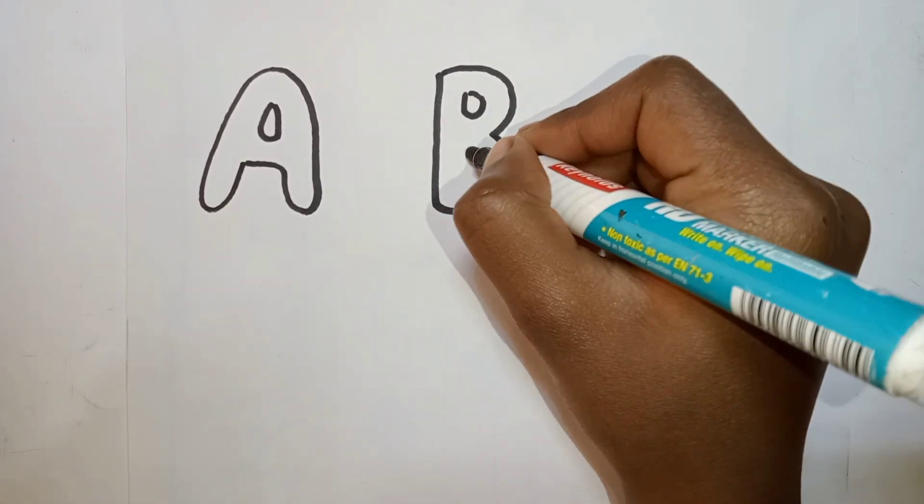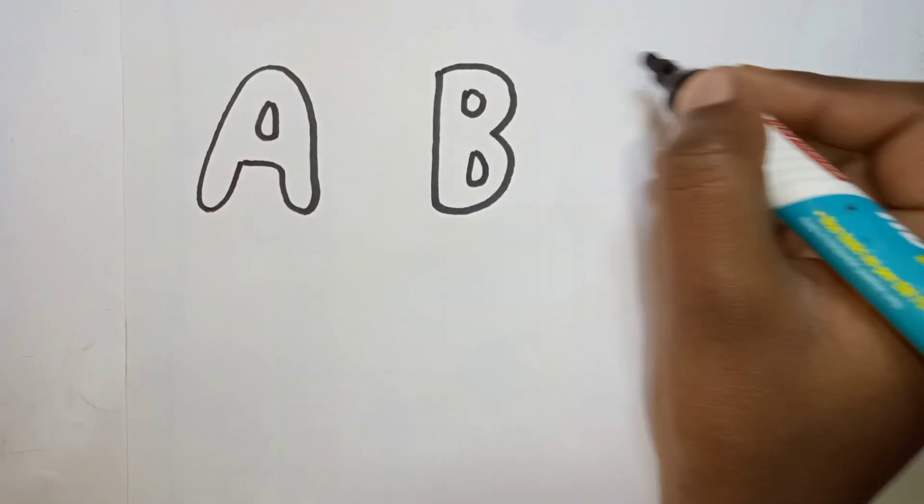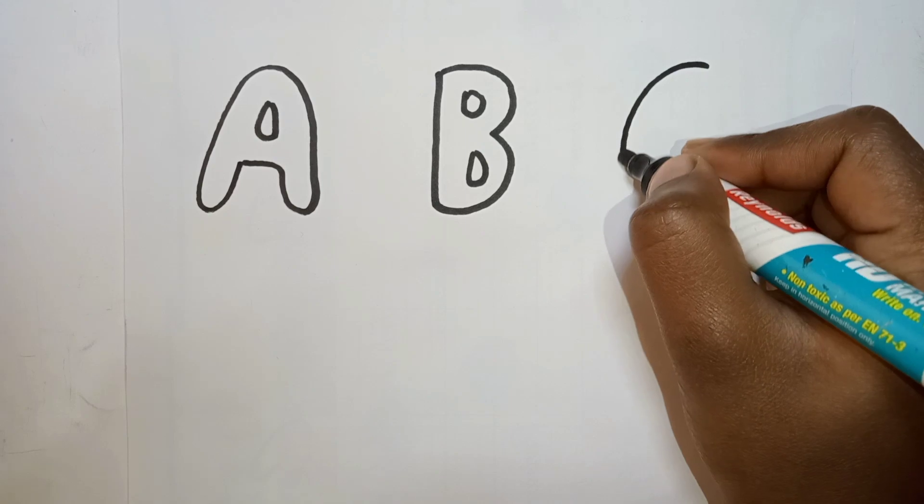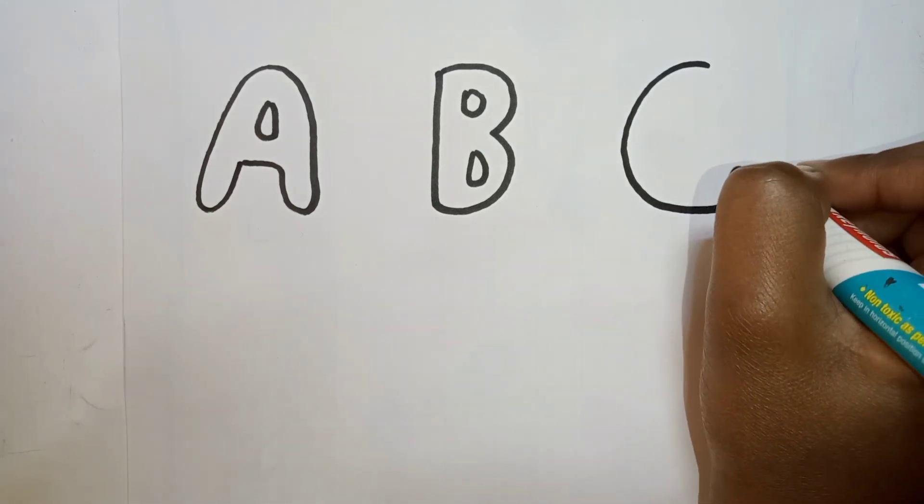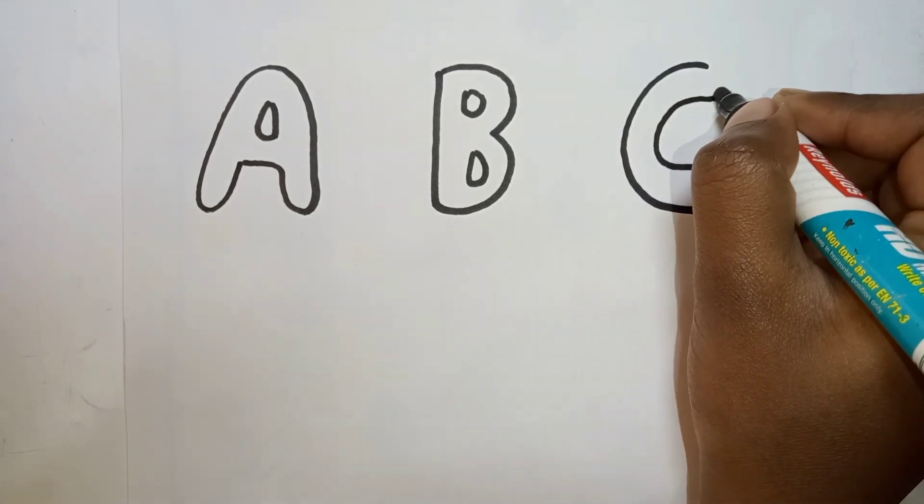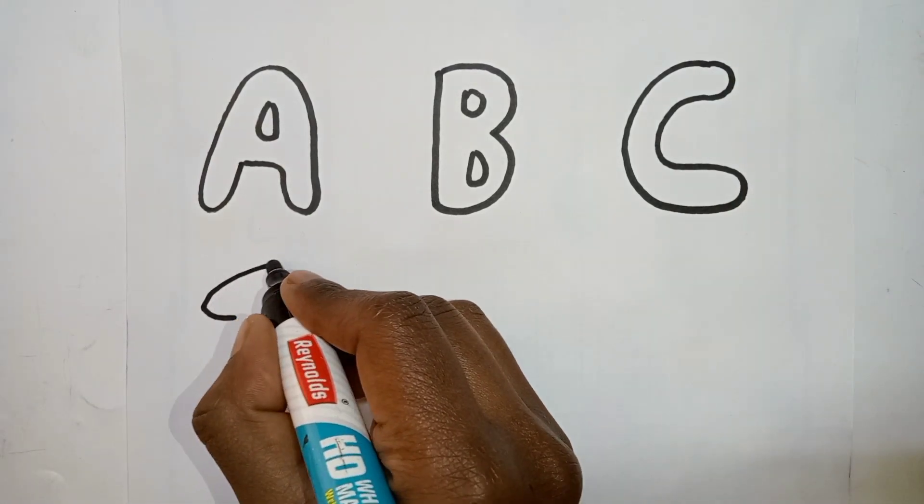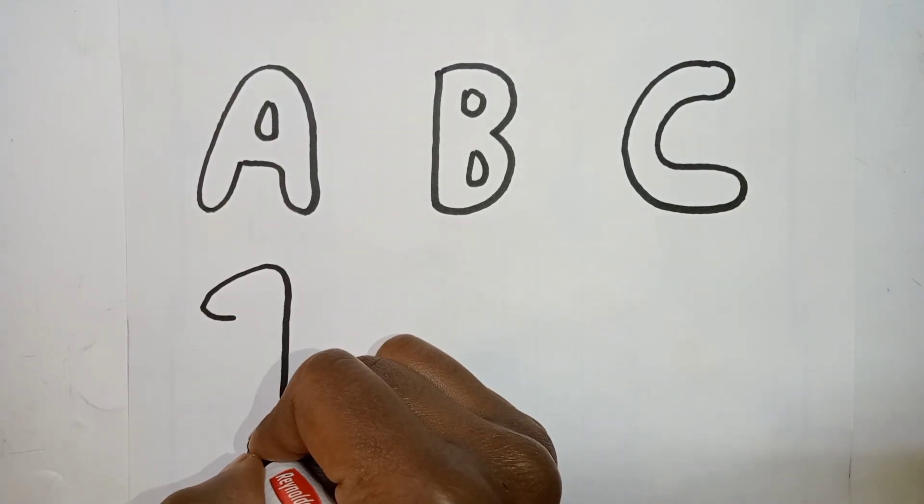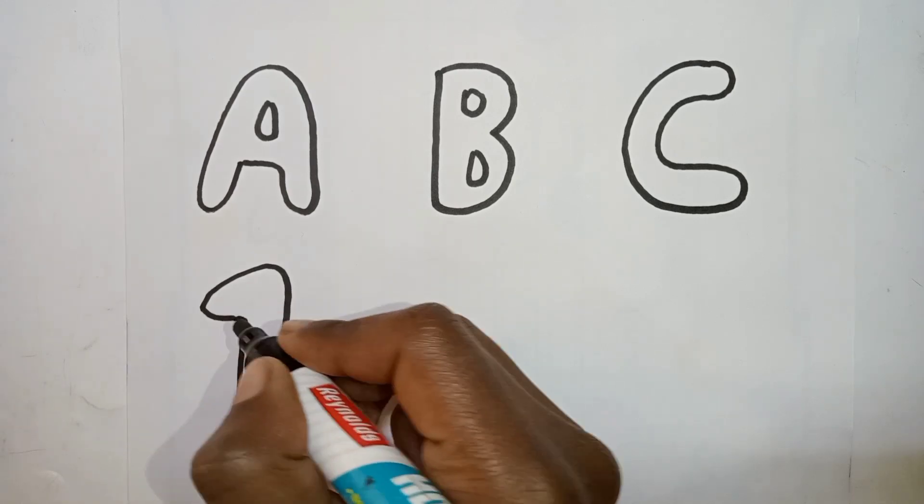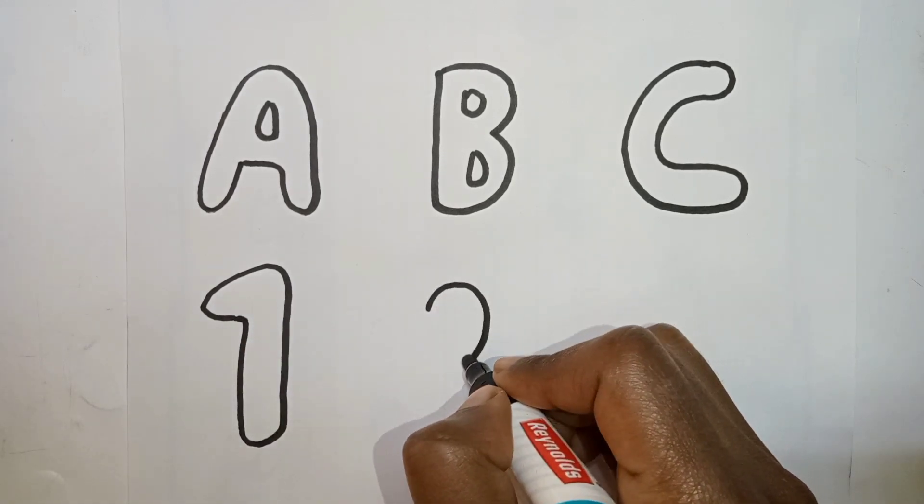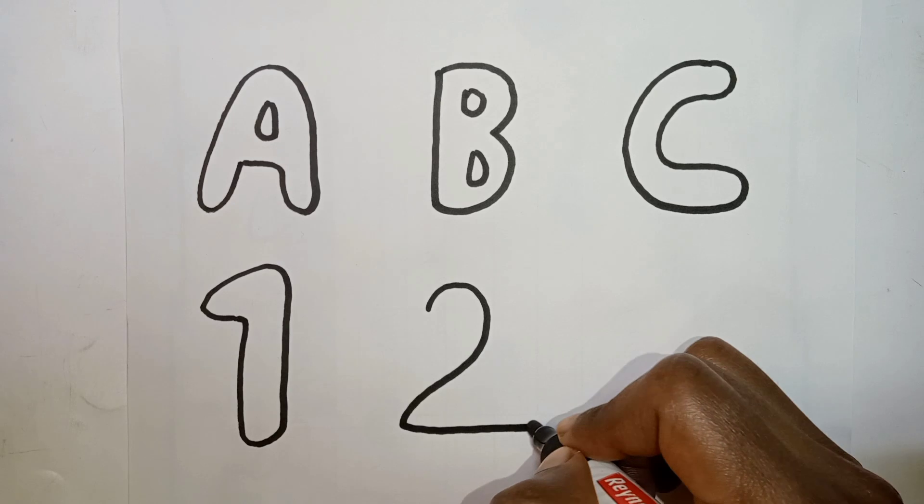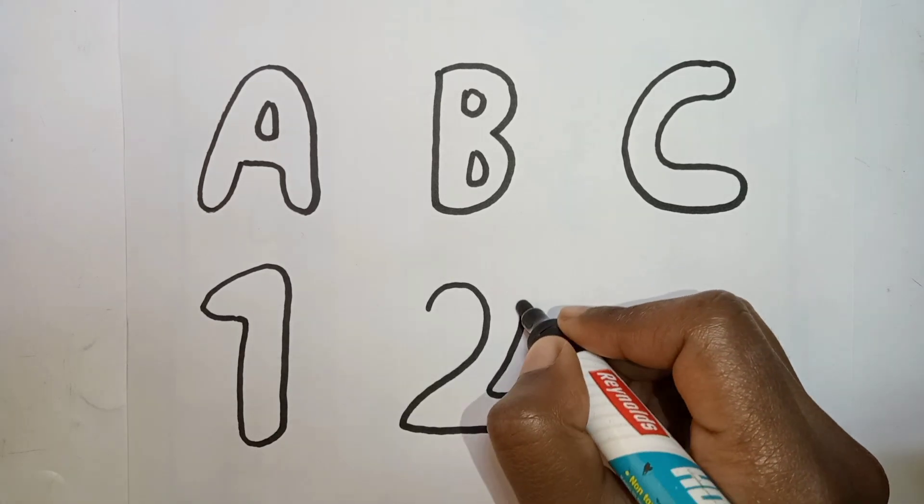Alphabet A. A for Apple, A for Apple. Q, R, S, T, U, V, W, X, Y, and Z. Now I know my ABCs.